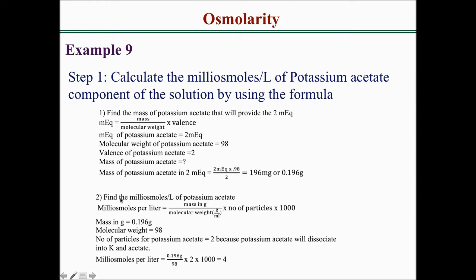Step 2 is to find the milliosmoles per liter of potassium acetate using the formula: milliosmoles per liter equals mass in grams divided by molecular weight in grams per mole, times number of particles, times 1000. Our mass is 0.196 grams, molecular weight is 98, and the number of particles is 2 because potassium acetate dissociates into potassium and acetate. Plugging in: 0.196 divided by 98 times 2 times 1000 equals 4 milliosmoles per liter.